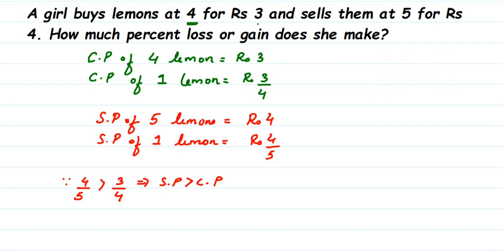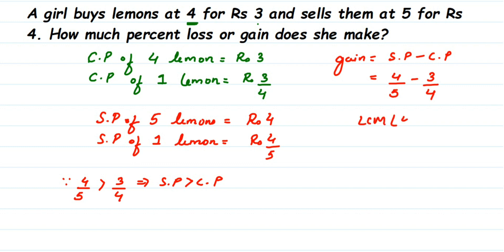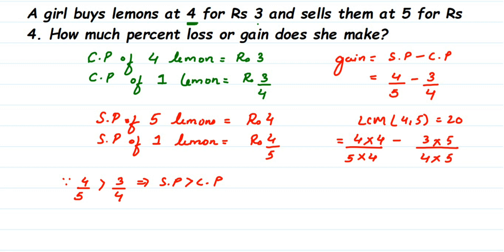Since selling price is greater than cost price, we get a gain. Gain equals selling price minus cost price, so gain = 4/5 − 3/4. Taking LCM of 4 and 5, which is 20: we get 16/20 − 15/20 = 1/20. So the gain on one lemon is 1/20 rupees.